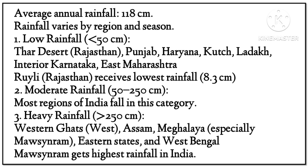Average annual rainfall in India is 118 centimeters. Rainfall varies by region: low rainfall (less than 50 cm) areas include the Thar Desert, Rajasthan, Punjab, Haryana, Kutch, Ladakh, interior Karnataka, and east Maharashtra. Barmer, Rajasthan receives the lowest rainfall at 8.3 centimeters. Moderate rainfall (50–250 cm) covers most regions of India.